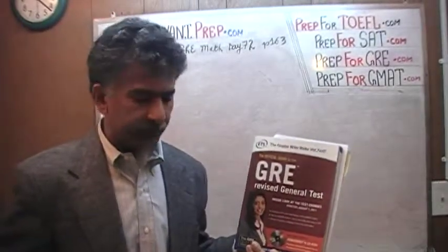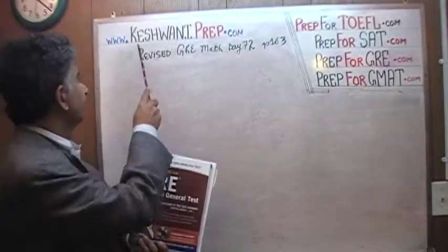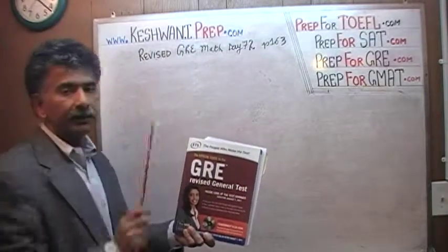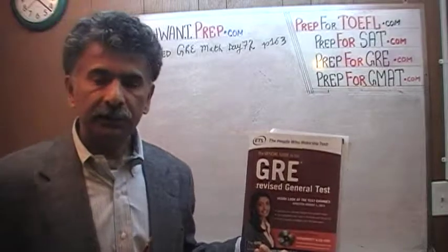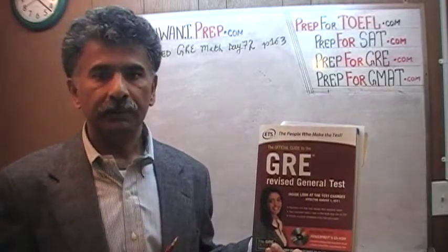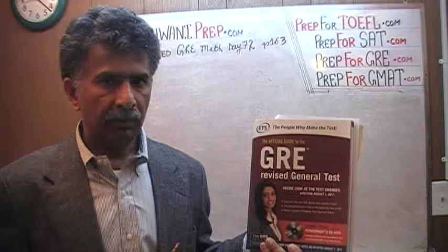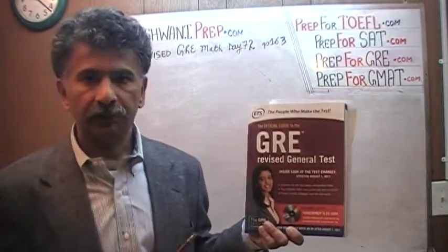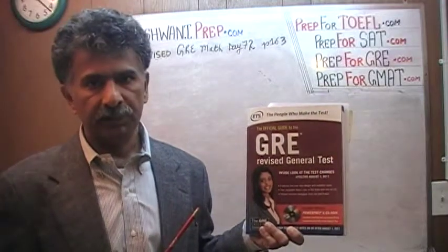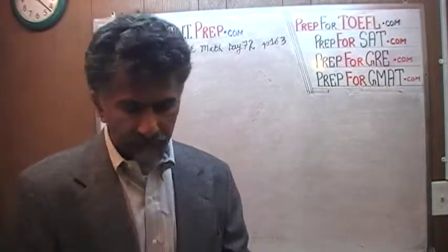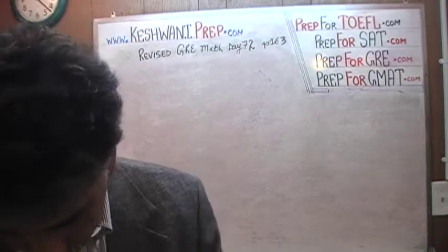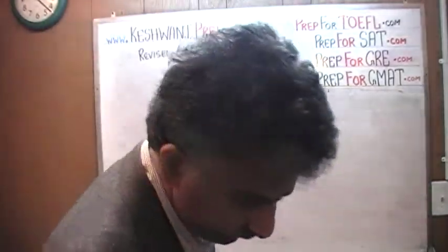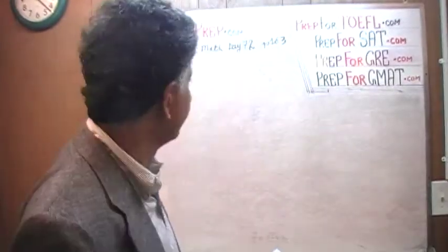Hello, my name is Keshwani — S-K-E-S-H-W-A-N-I — Keshwani. We are here because we want to prepare for the GRE. We have been solving math problems out of this book, the official guide to the GRE, the revised general test. If you do not own this book already, purchase one immediately — you are going to need it. The problem that we are about to solve today is on page 163, the very top one, number 5. Question number 5 on page 163.